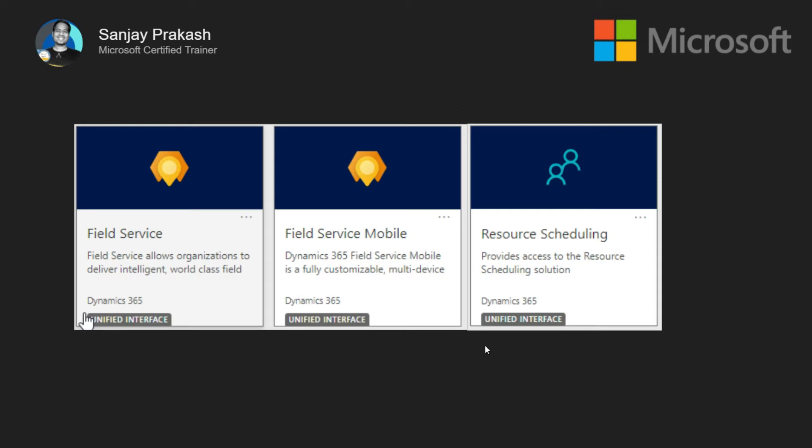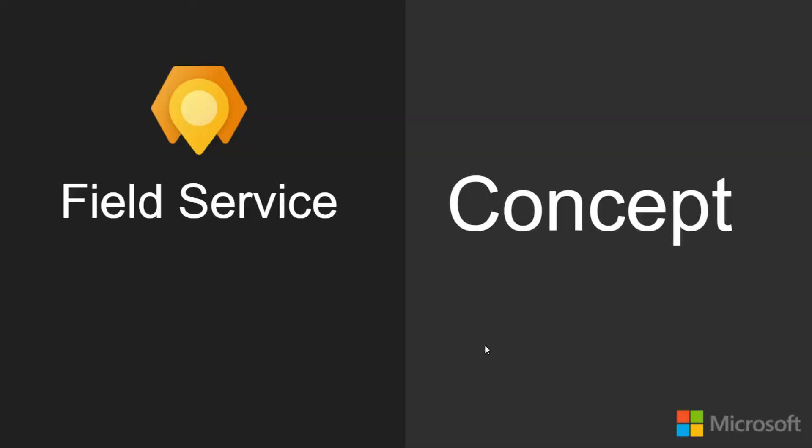Conceptually, Field Service is an application used to provide a service to the customer by visiting their place and doing some activity like installation or repair. For example, a case is created to install a machine at the customer's place. You create a case, create a work order out of that case, then schedule the work order so that an engineer will visit the customer's place to complete the work. This kind of scheduling and work order management is what the Field Service module is about.